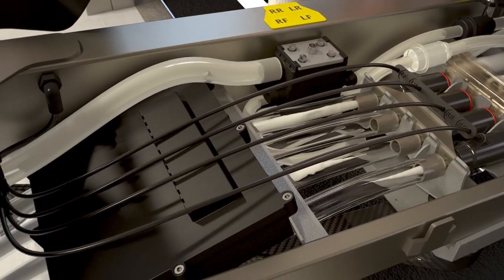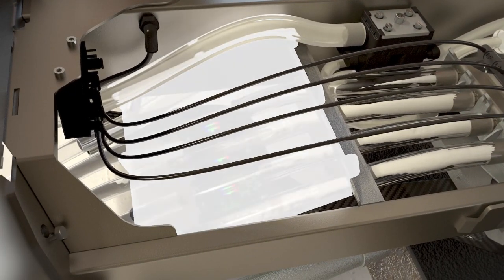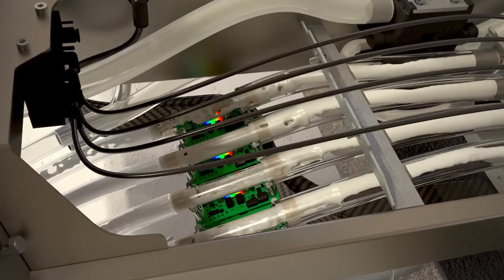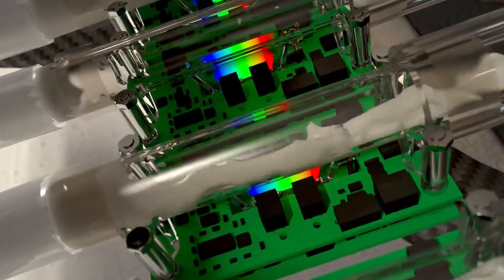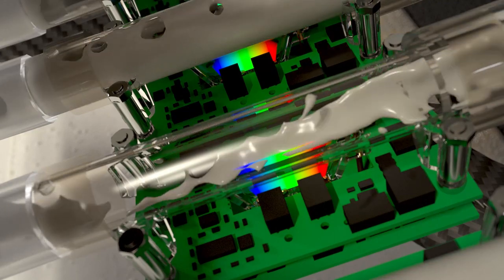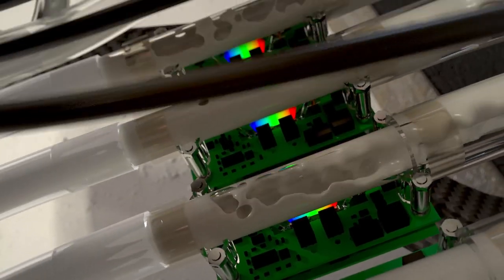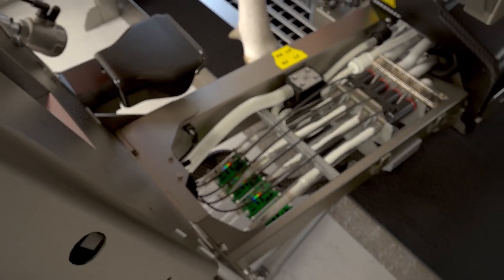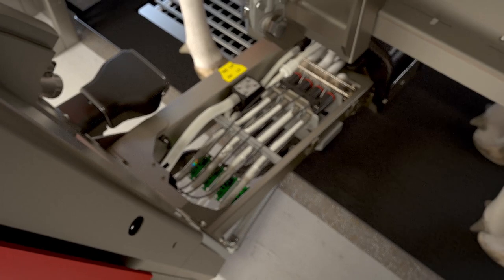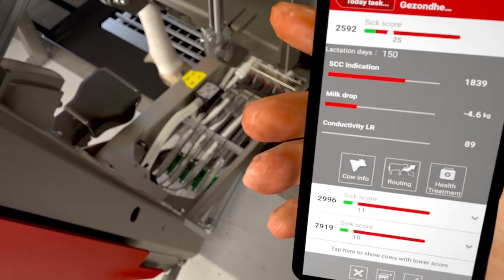During milking, the MQC monitors the milk continuously safeguarding the quality of the milk. In order to be able to spot any health issues at an early stage, some parameters immediately trigger a warning in the T4C management program and the mobile T4C in-herd.